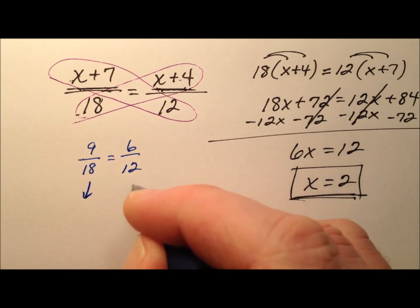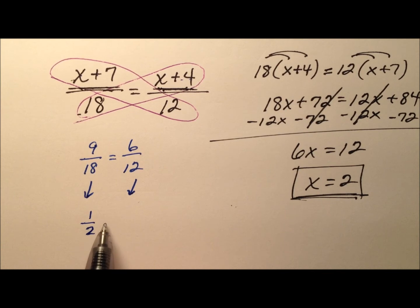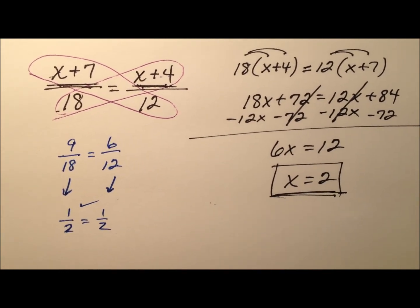Let's just go ahead and reduce both of those fractions. 9 over 18, well that's just a nice 1 half. And 6 over 12 is also a nice 1 half, so it checks out.